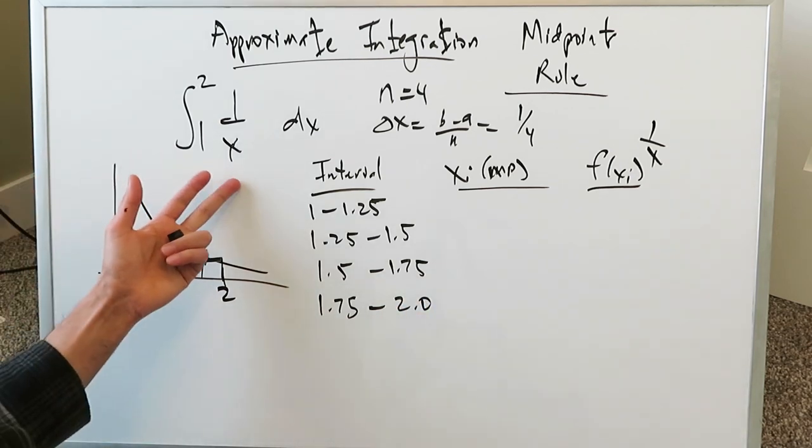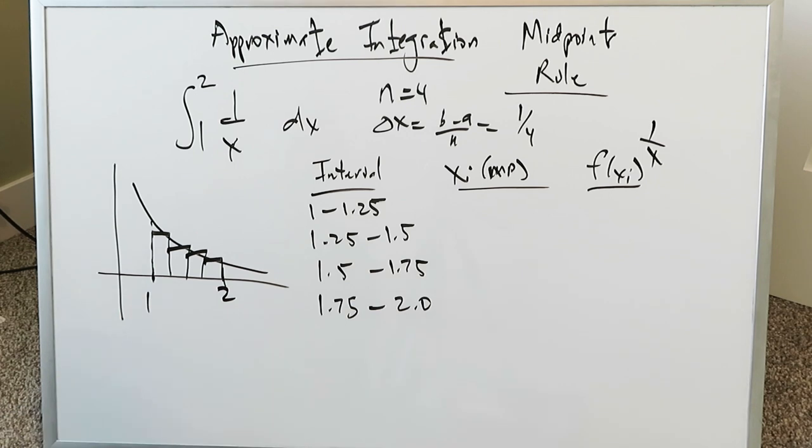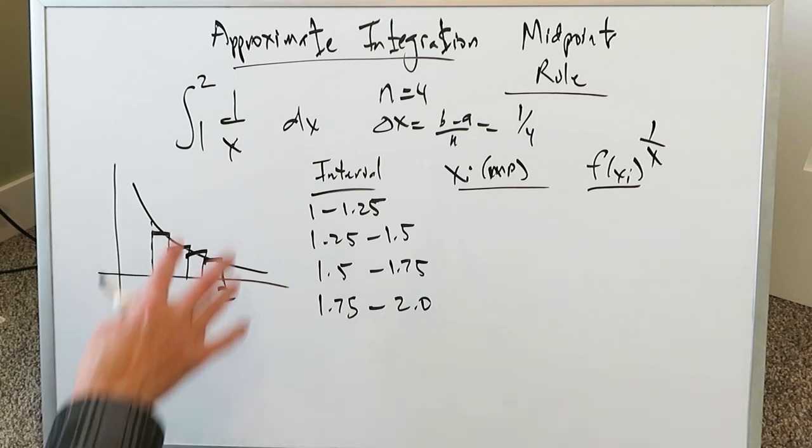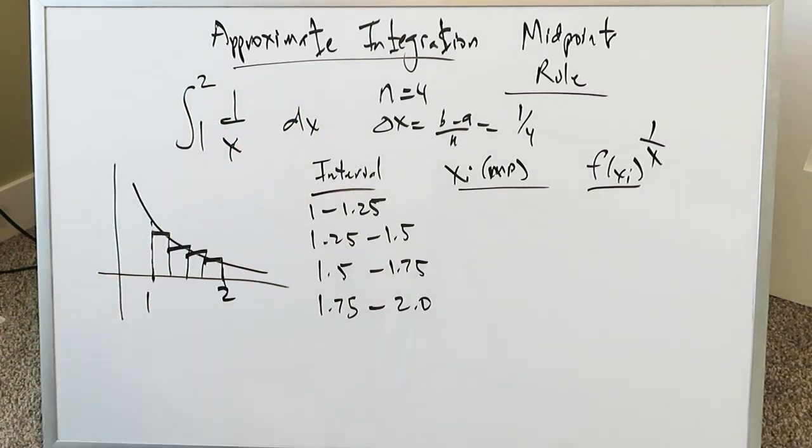Remember again you're looking here at a conventional function for which a very easy antiderivative exists. You know that's going to bring in the natural log x but if supposedly this specific function did not have an antiderivative template then you have to use this technique.